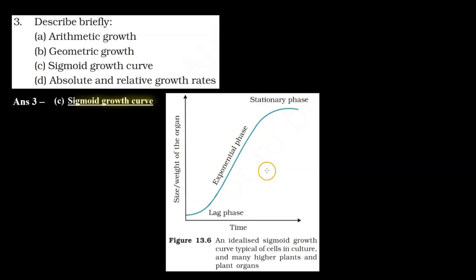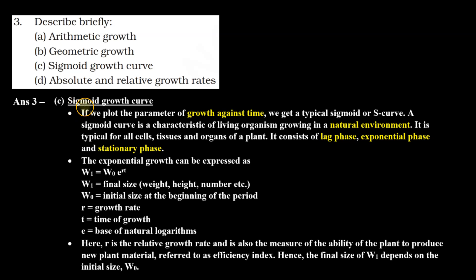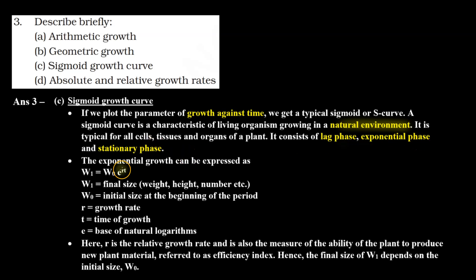This is our S-shaped curve or sigmoid growth curve. Answer C — sigmoid growth curve. If we plot the parameter of growth against time, we get a typical sigmoid or S-curve. A sigmoid curve is a characteristic of living organisms growing in a natural environment. It is typical for all cells, tissues, and organs of a plant. It consists of lag phase, exponential phase, and stationary phase.